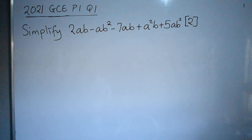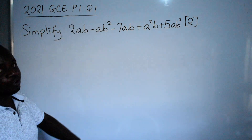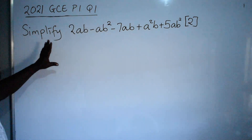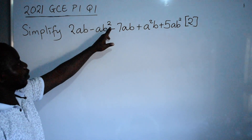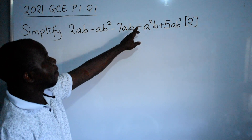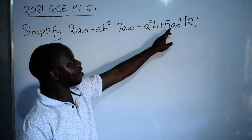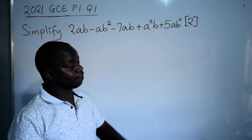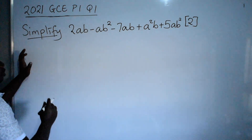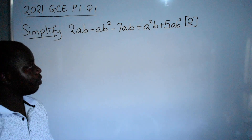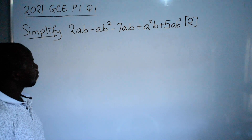Hello friends, let's look at the 2021 GCE paper 1 question 1. Simplify 2ab minus ab squared minus 7ab plus a squared b plus 5ab squared. We are told to simplify — make it simple. That is simplification.